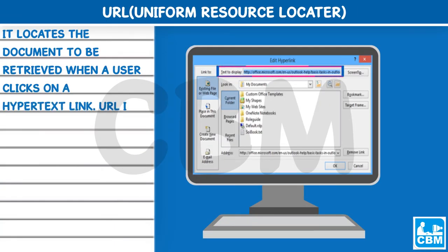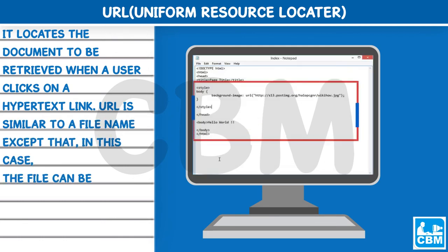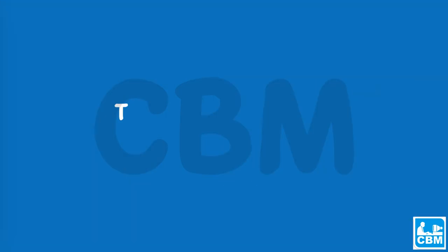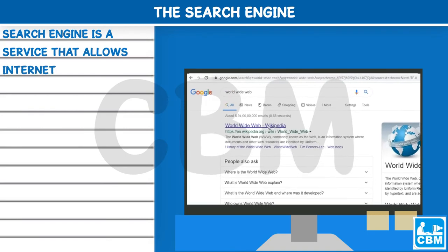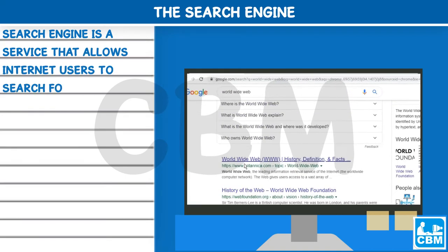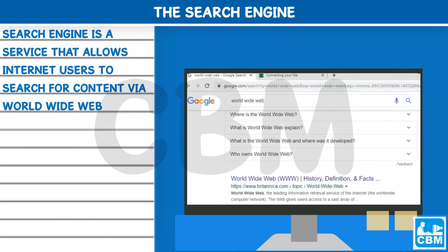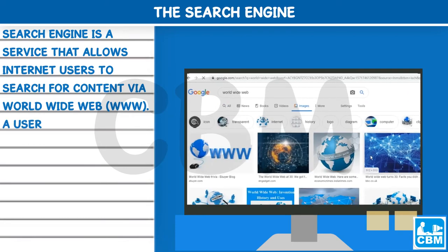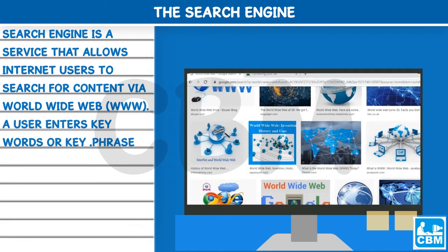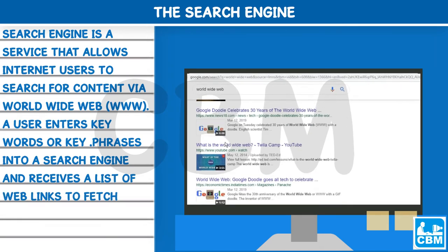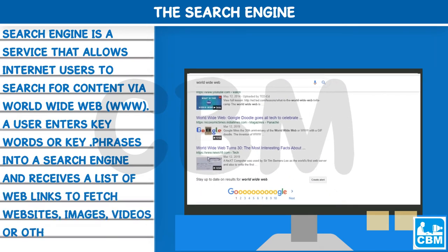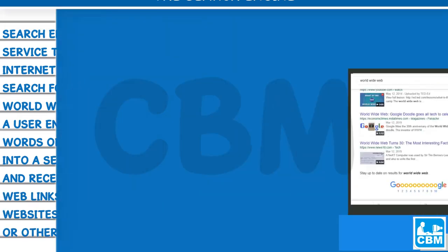URL (Uniform Resource Locator): A URL locates the document to be retrieved when a user clicks on a hypertext link. A URL is similar to a file name, except that the file can be on the same machine or on a different machine in the network. Search Engine: A search engine is a service that allows internet users to search for content via the World Wide Web. A user enters keywords or key phrases into a search engine and receives a list of web links to websites, images, videos, or other online data.